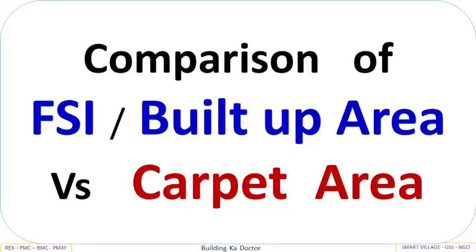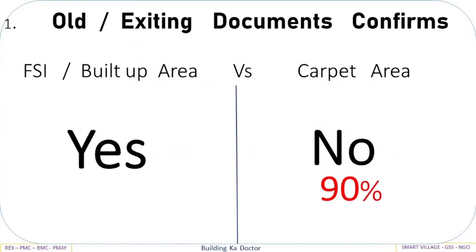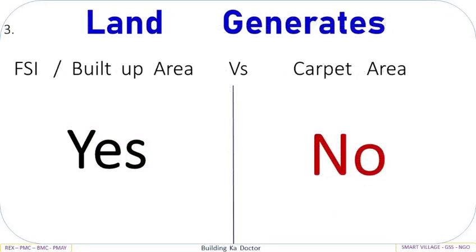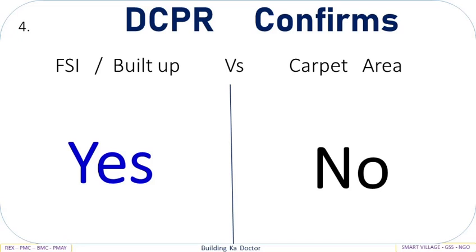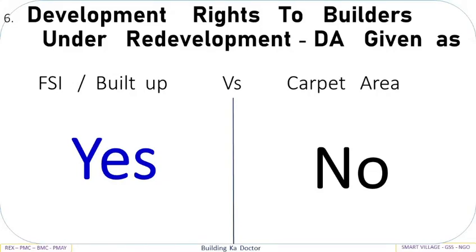Comparison of FSI Built-Up Area vs Carpet Area — Technical Confirmation, Part 1. Old existing documents confirm FSI Built-Up Area: Yes, vs Carpet Area: No — 90%. Present building plan confirms FSI Built-Up: Yes, vs Carpet Area: No — 90%. Land generates FSI Built-Up Area: Yes, vs Carpet Area: No. DCPR confirms FSI Built-Up: Yes, vs Carpet Area: No. Property rights ownership confirms FSI Built-Up Area: Yes, vs Carpet Area: No. Development rights given to builders under redevelopment DA are given as FSI Built-Up: Yes, vs Carpet Area: No.